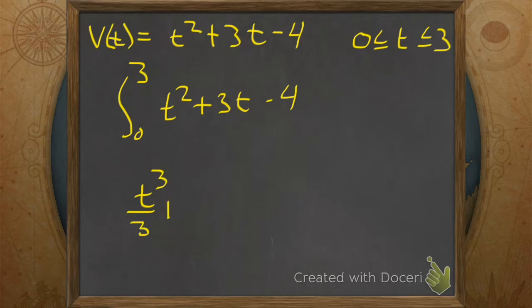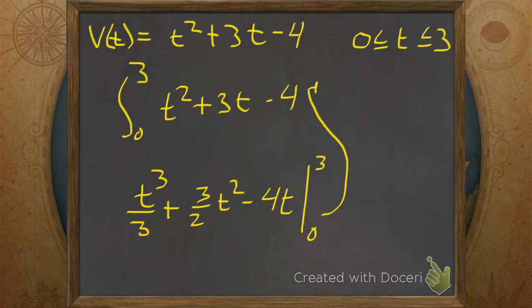That's T to the third over 3 plus 3 over 2 T squared minus 4T. And then we evaluate from 0 to 3. That lower limit is just zero. So now we evaluate upper minus lower. That's 3 to the third over 3 plus 3 halves 3 squared minus 4 times 3 minus a big fat 0. What is that? 9 plus 27 over 2 minus 12. What does that come down to?